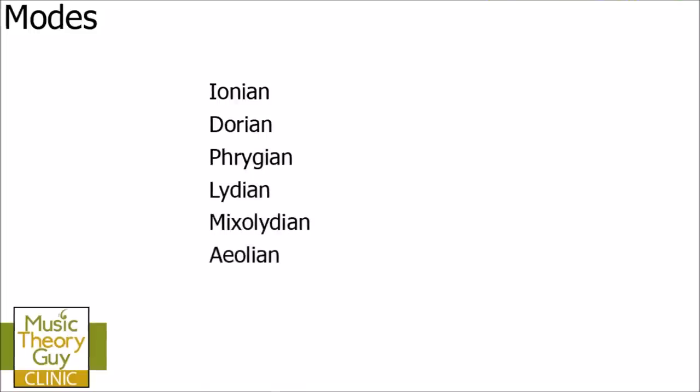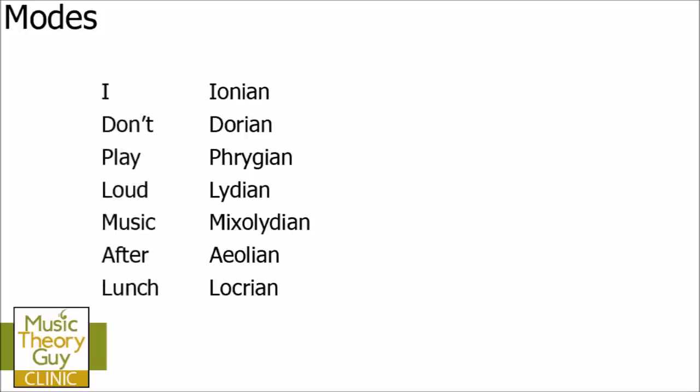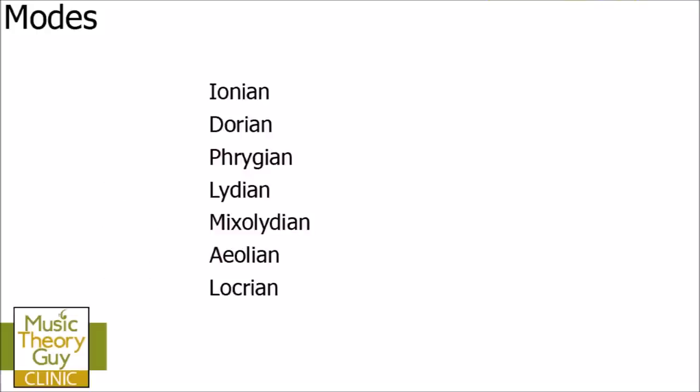There are seven different types of modes and they are called Ionian, Dorian, Phrygian, Lydian, Mixolydian, Aeolian, and Locrian. To remember these, there's a phrase: 'I don't play loud music after lunch.' You take the first letter of each word and that becomes the first letter of each mode. There are two L's, so you have to remember that both Locrian and Lydian are in there — and Locrian always comes last.